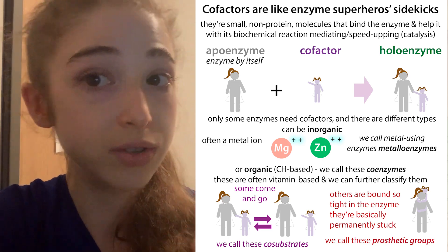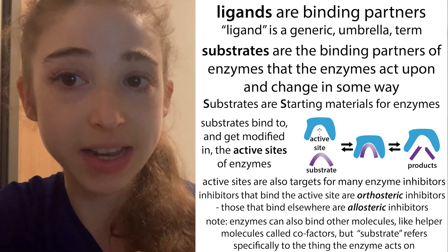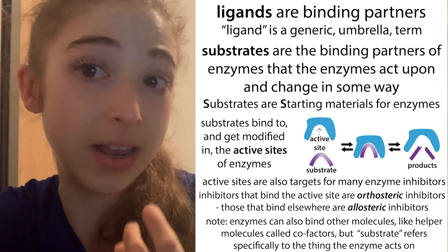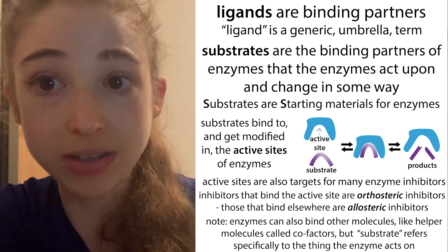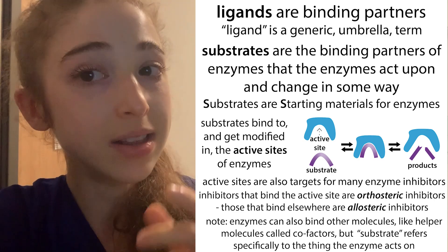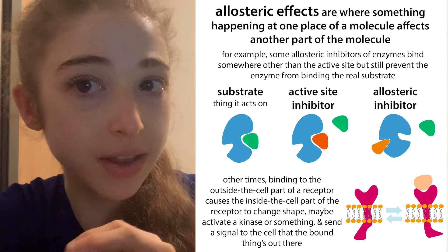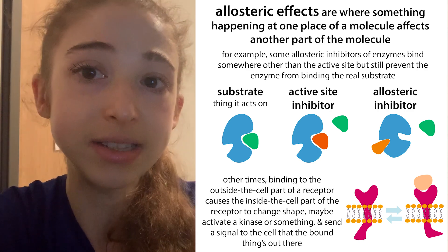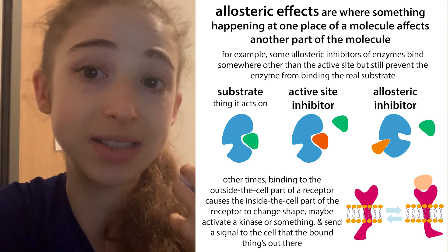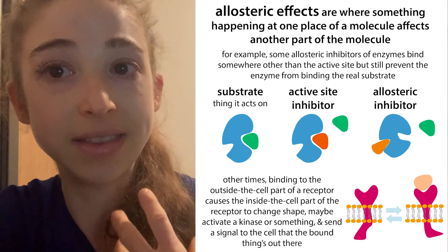We can also talk about the binding locations of substrates on enzymes — typically we talk about the active site. The active site is where the substrate binds on an enzyme and where the enzyme then acts on it. The active site is often where competitors and inhibitors bind, but not necessarily. Things can also bind to other sites, called allosteric sites, which are sites other than the active site. Binding to those other sites causes the enzyme to change shape and affect its activity, potentially affecting how the active site is shaped so it doesn't bind the substrate as well.